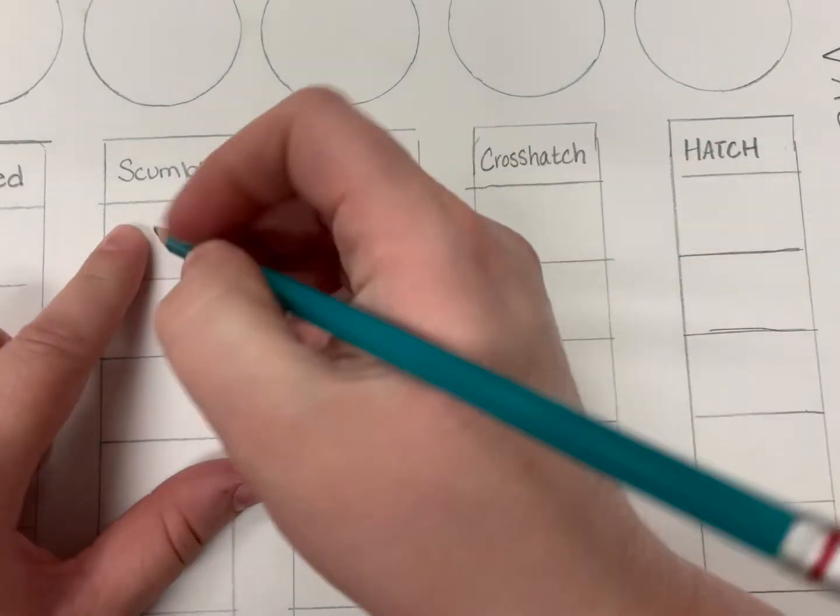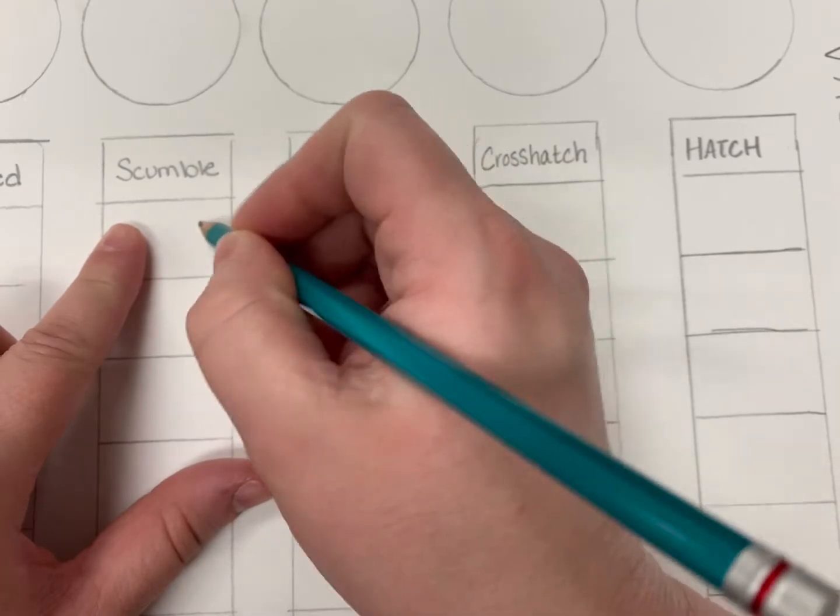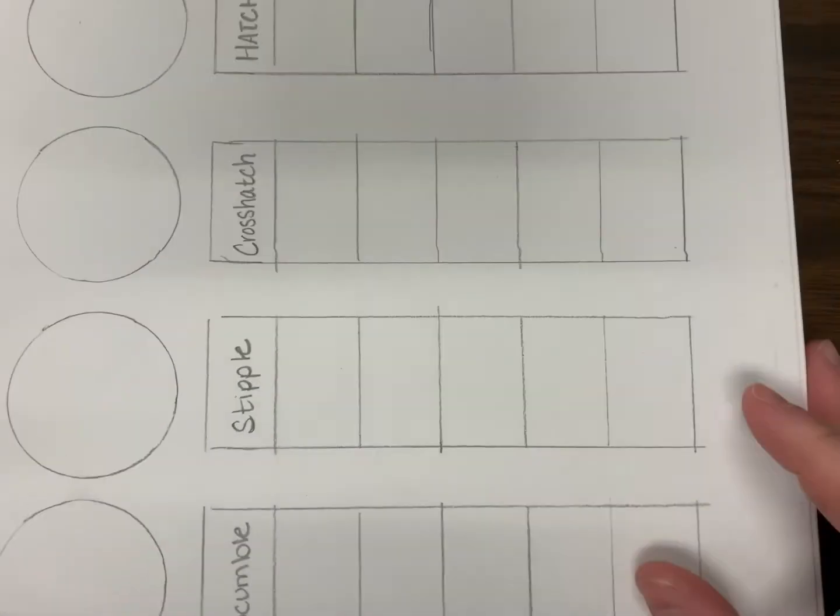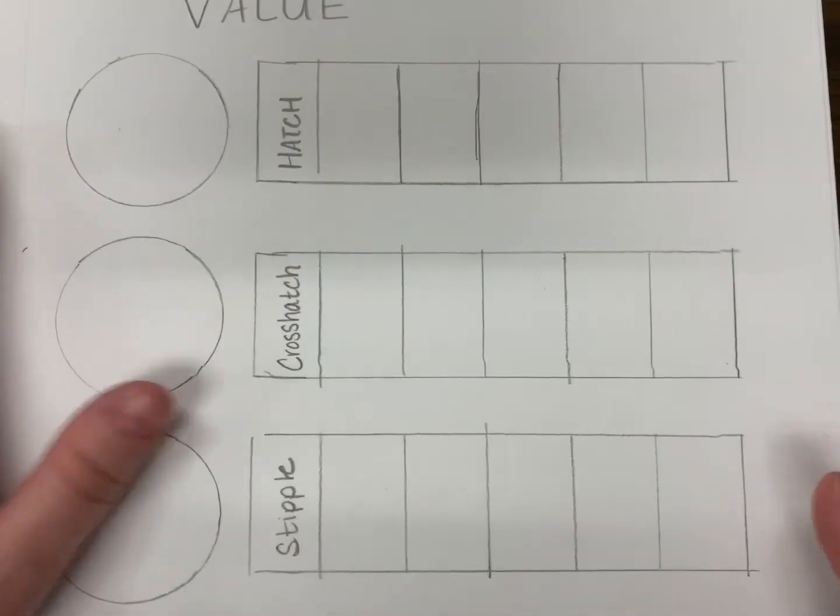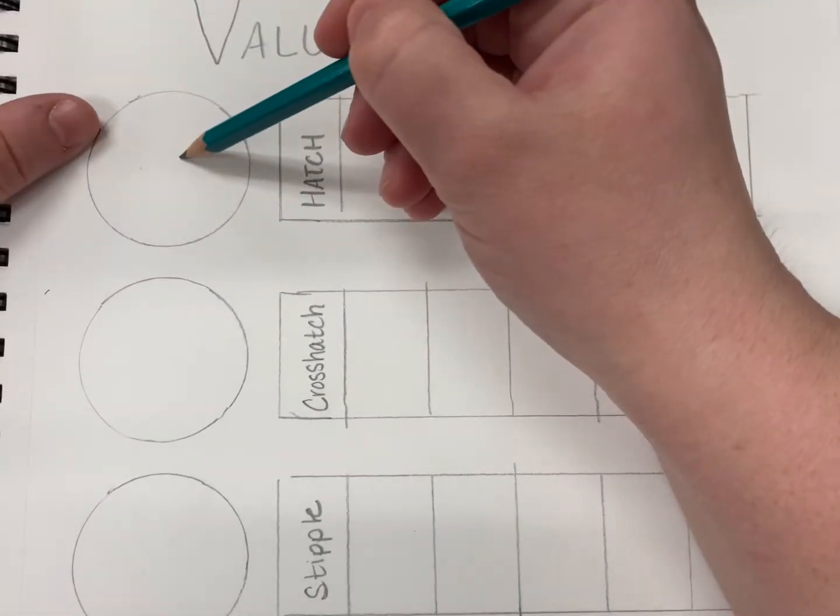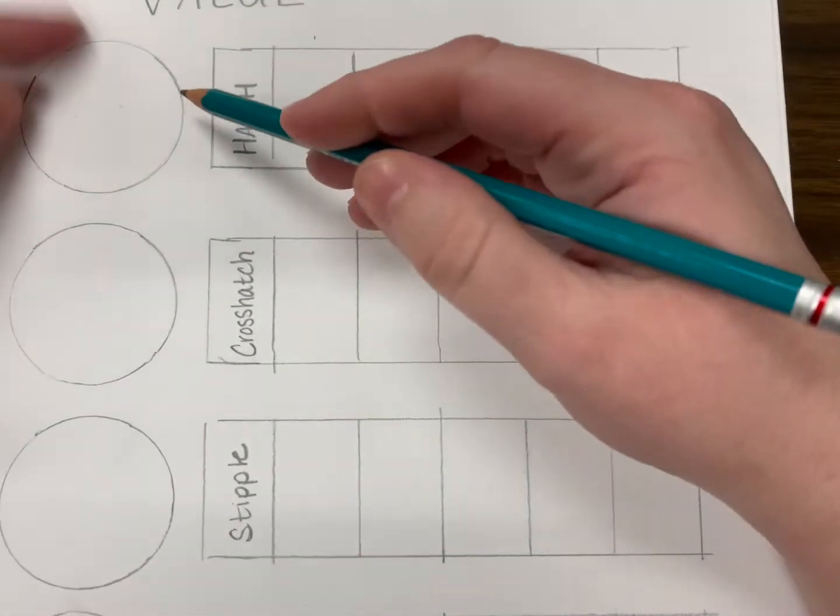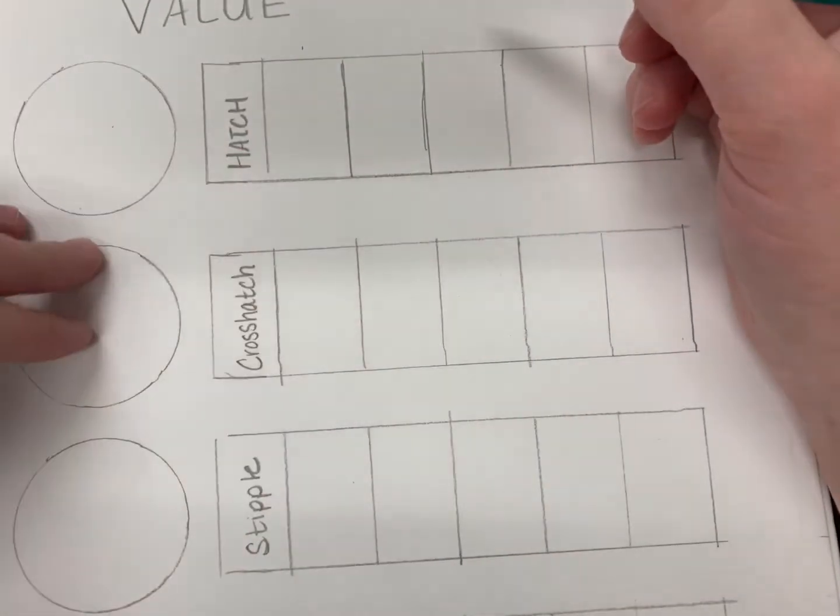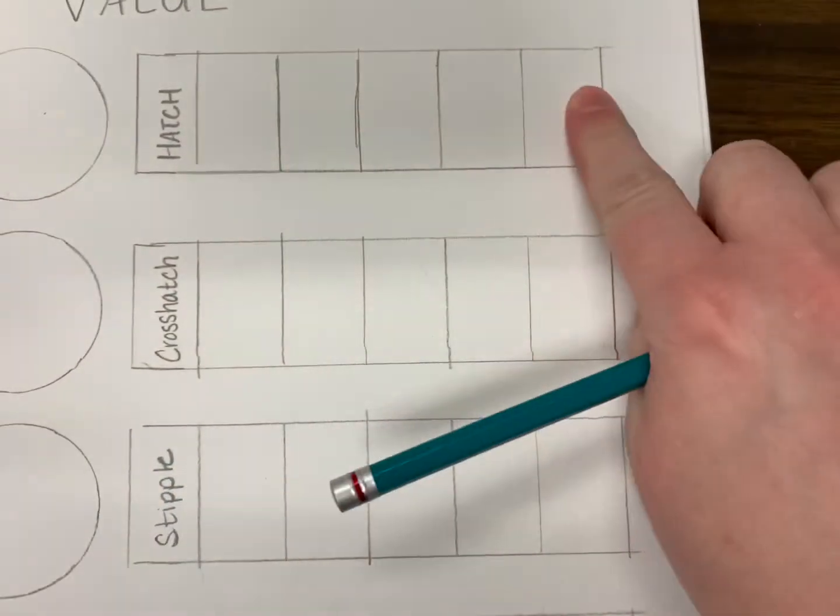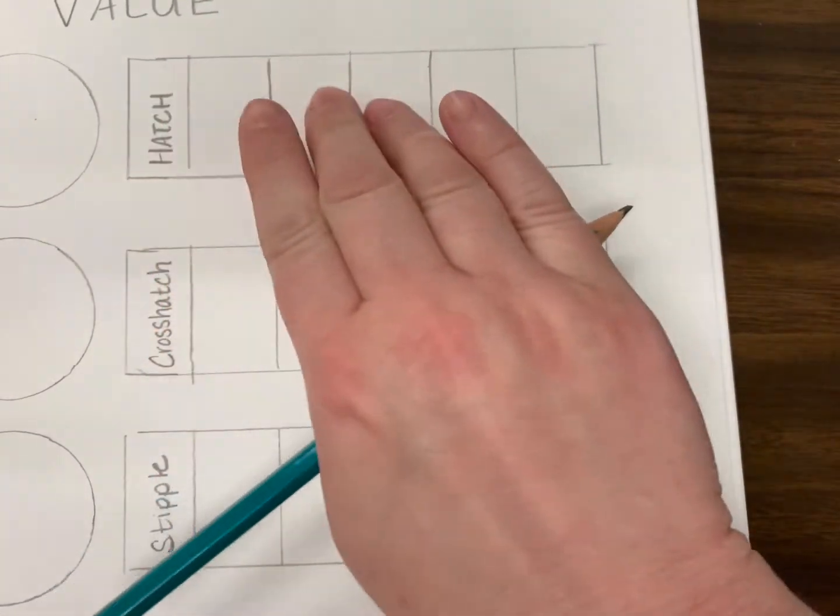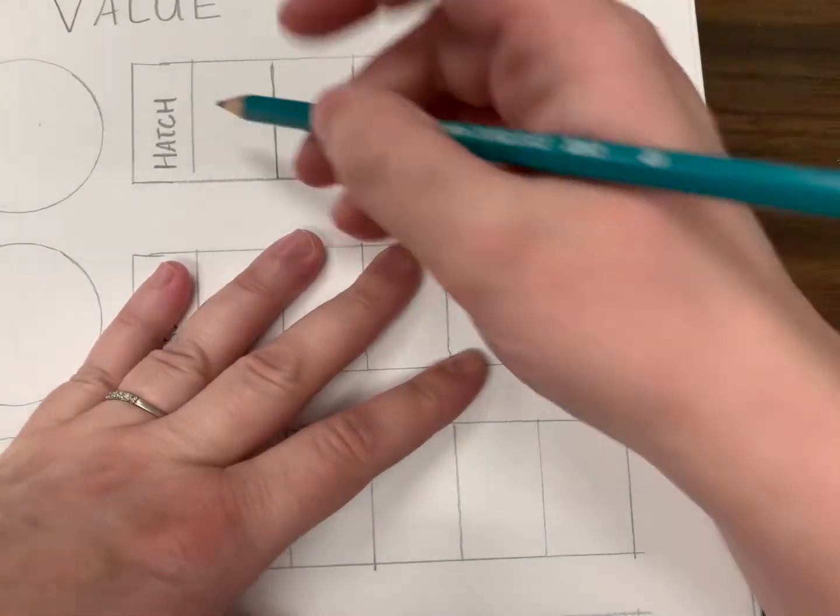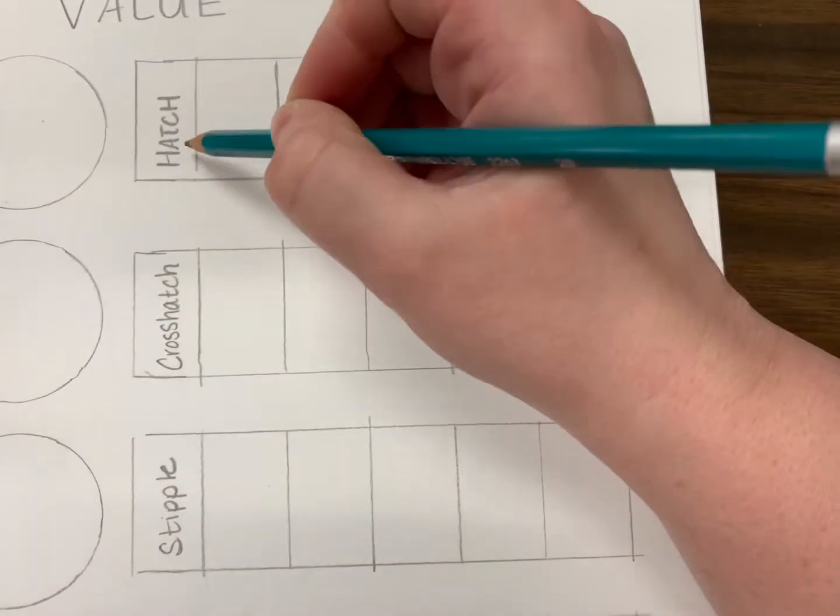Then we have a scumble, a little bit irregular but think of it like scribbles. So let's see what that looks like. You're going to have a chance to practice all five of these, applying it to an object such as a sphere, which starts out as a circle but once the value is added to it it will look more three-dimensional. And then to start with, a value scale is showing a step-by-step as it gets lighter and then goes darker.